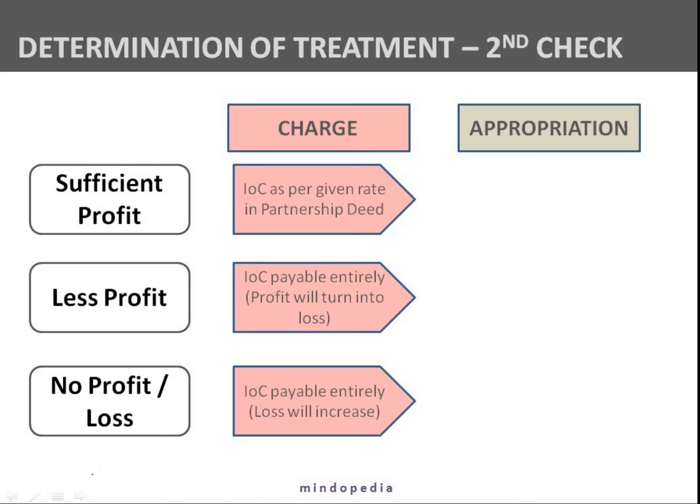If it is a charge, you will have to pay the entire 36,000. The 6,000 excess will be considered as loss, and that 6,000 will be distributed among Joy and Sorrow in their profit sharing ratio. We have already discussed that charge means something which is supposed to be given regardless. In a no-profit or loss condition, interest on capital is again supposed to be paid entirely, and the loss will increase.